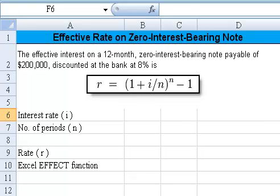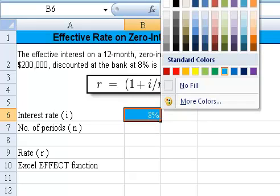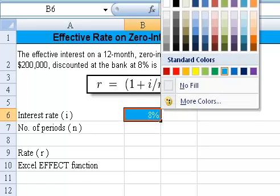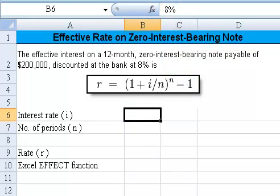I've worked this one ahead of time just to save some time. So the interest rate, I'll bring that to light. Interest rate, I'll make that not the background color. I want to make the font color black is 8%. The number of periods is 12.